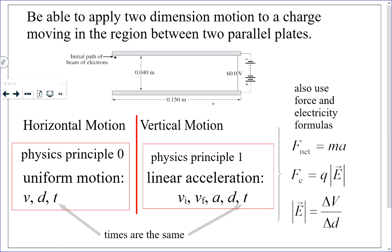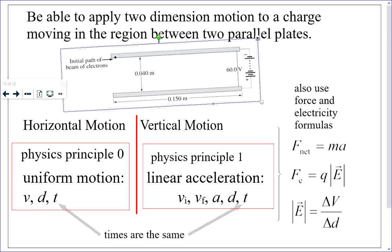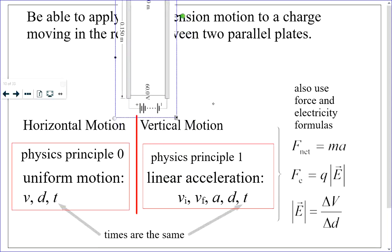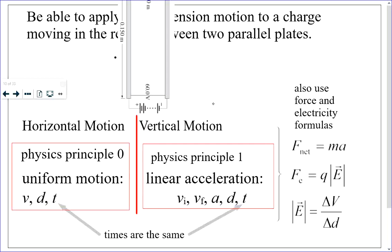A couple of points: if you turn the diagram so the plates are oriented differently, what was horizontal may now be the accelerated motion dimension. I know everyone understands it shouldn't matter — so if you're looking at a diagram like that, just physically rotate it on your desk during an exam so it looks the way you're used to. That would be my advice.